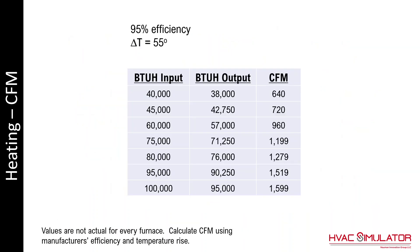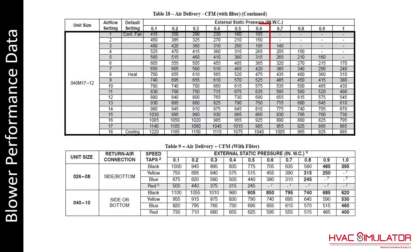This chart represents multiple BTU inputs of furnaces with the calculated CFM. These values may not be correct for every furnace — calculate CFM using the manufacturer's efficiency and their temperature rise. On the top chart, there are 18 blower speeds with approximately 900 CFM between the lowest and highest speeds. On the bottom chart, there's only 255 CFM from the lowest to the highest speed, making it critical to set up these speeds correctly to ensure the furnace is running at peak performance.